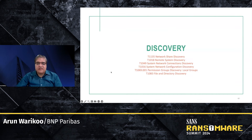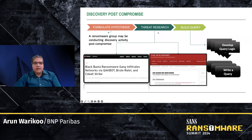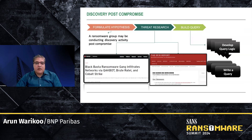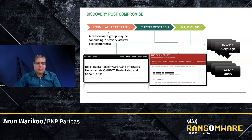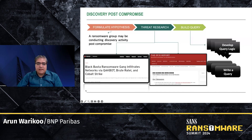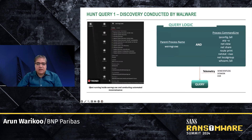Next, I briefly want to talk about discovery — a very common tactic used by ransomware groups. From a threat research perspective, I would like to highlight two reports: one from Trend Micro and the other from DFIR. The Trend Micro report is interesting because it shows how Qbot was used as an initial payload for discovery and then for deploying additional payloads like Cobalt Strike, which led to the deployment of Black Basta ransomware. The DFIR report provides a very good artifact on how AdFind was used as a tool for discovery. The hypothesis here would be as simple as: a ransomware group may be conducting discovery activity post-compromise.